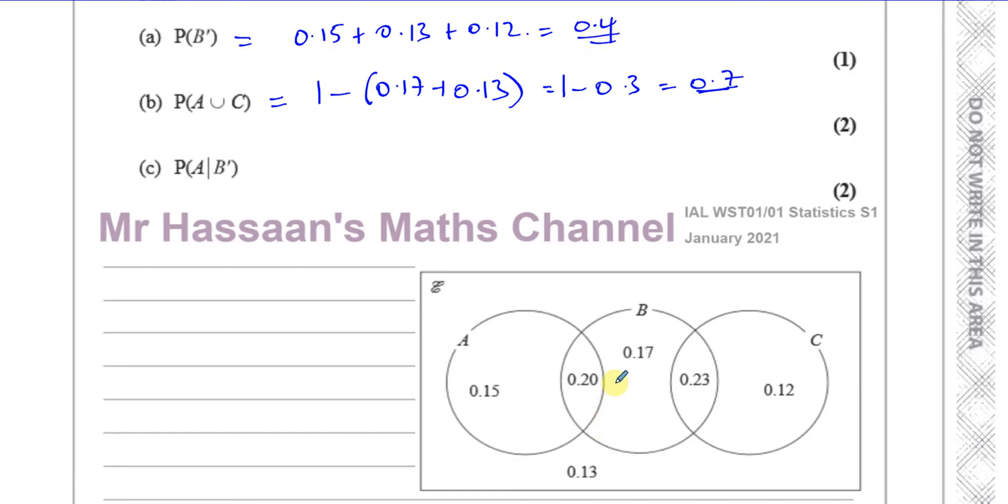So that's the answer for the second part. We could have also done this by saying the probability of A union C is this plus this, plus this, plus that. So that's going to be 0.23 plus 0.12, which is going to be 0.35. So that was 0.35 plus 0.2, plus 0.15 is 0.35. If you add them together, you get 0.7. Okay, so that's another way of doing it as well. Either way is fine.